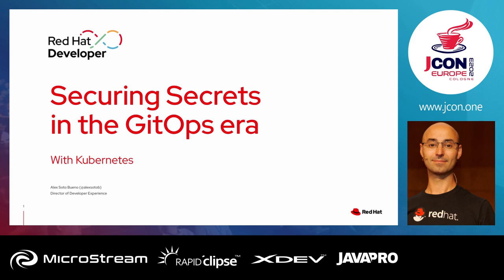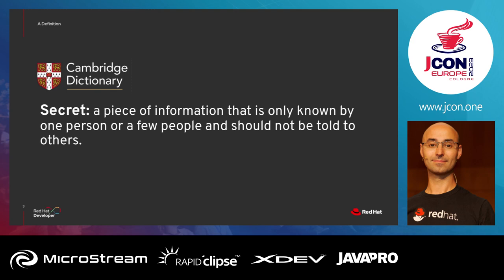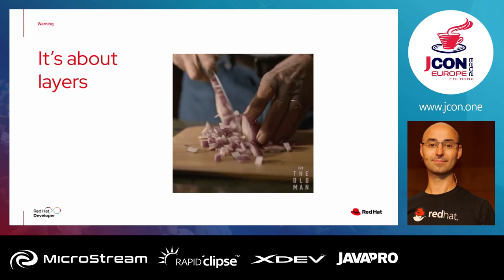Today we're going to learn how to secure secrets in the GitOps area. My name is Alex Soto — you can find my Twitter and some books for more information. First, a definition: what is a secret? From the Cambridge dictionary, it's a piece of information only known by one person or a few people that should not be told to others. We're talking specifically about secrets that developers, operations, or DevOps engineers use to access databases, email services, or third-party API keys.